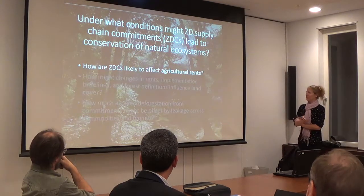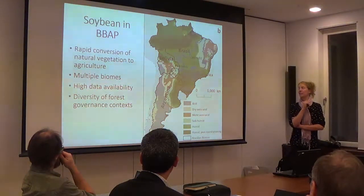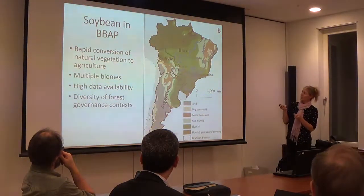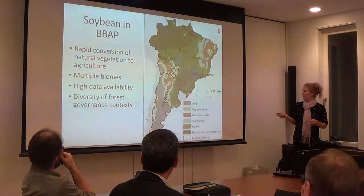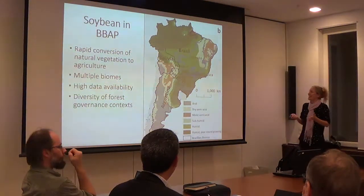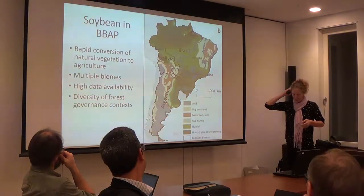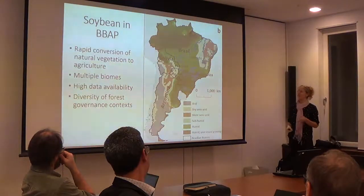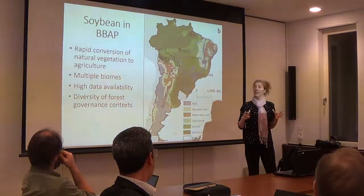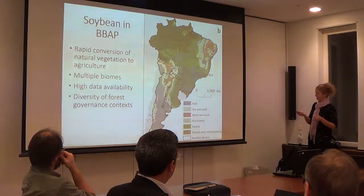To tackle the first question, we're doing field work starting this summer to understand agricultural rents. The study region we're calling VBOP covers Brazil, Bolivia, Argentina, and Paraguay — we're excluding Uruguay because the data are less available. There's a lot of conversion of natural vegetation to agriculture here, we need to work across multiple biomes, and there's high data availability and a diversity of forest governance contexts. This diversity will allow us to understand leakage within the region and then hopefully globally.